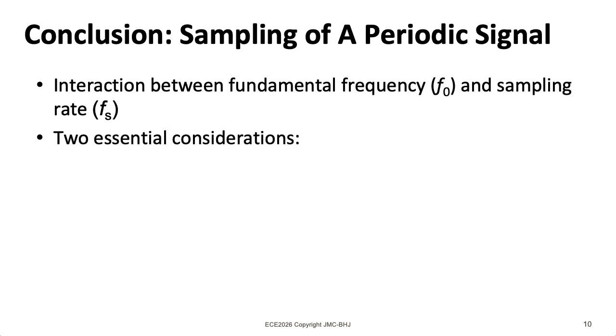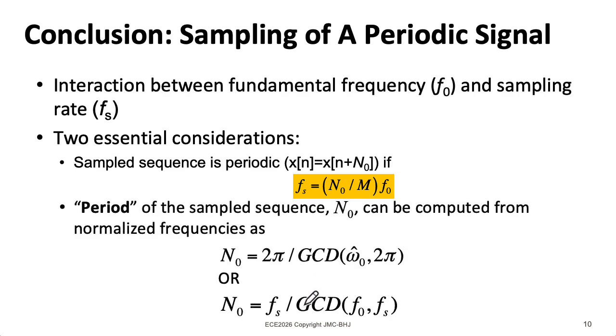So to review, if you're sampling a continuous time signal with a fundamental frequency f₀, your sampled sequence will be periodic if your sample rate is the frequency of the signal times a ratio of integers. And you can figure out the period of that sequence using two formulas. This formula involving the frequency of that continuous time signal and the sample rate is convenient if you're thinking about designing system sampling continuous time signals. But you could also use this formula here. And this formula is particularly handy if you're not even thinking about a continuous time signal and you're starting from the standpoint of thinking about a discrete time signal.